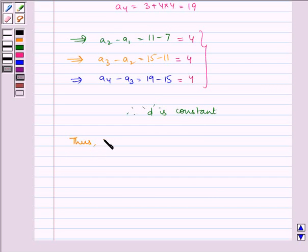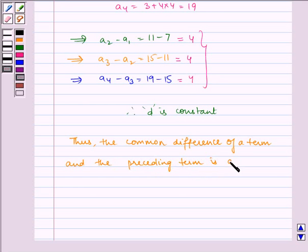Thus, the common difference d between a term and its preceding term is constant.